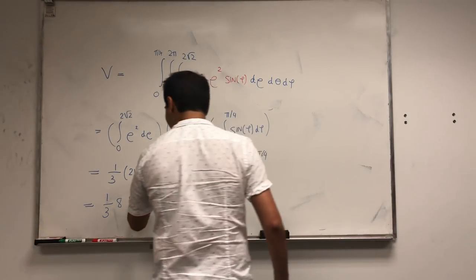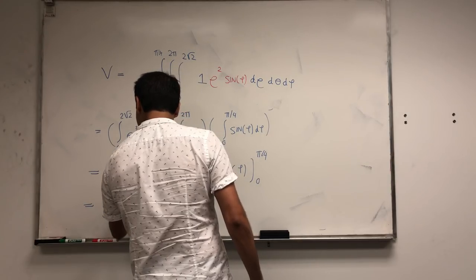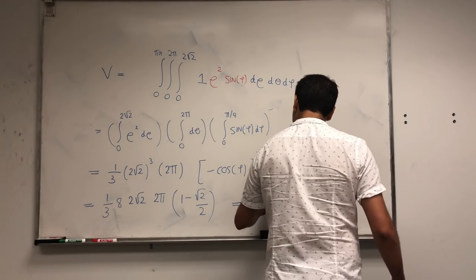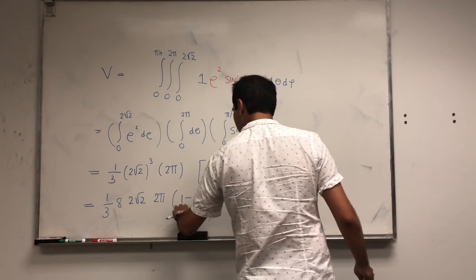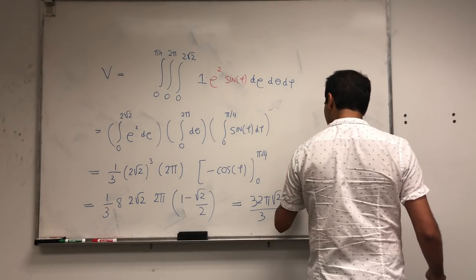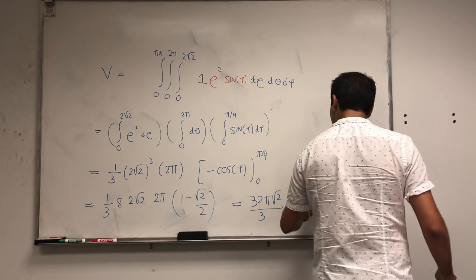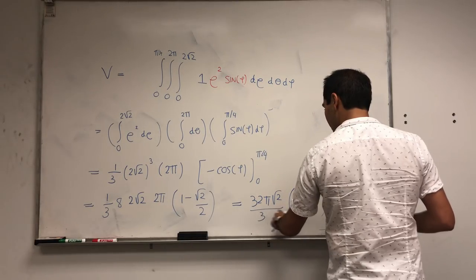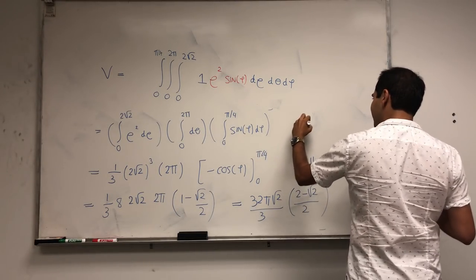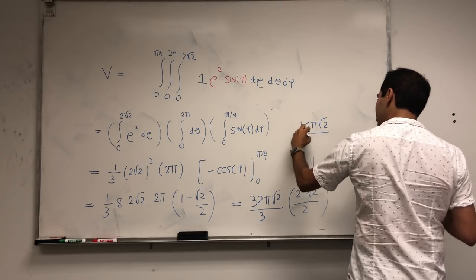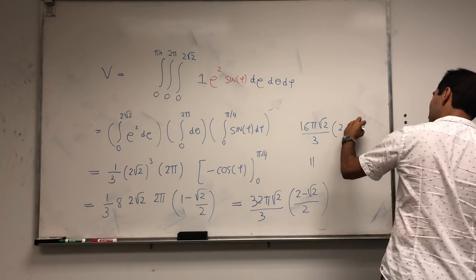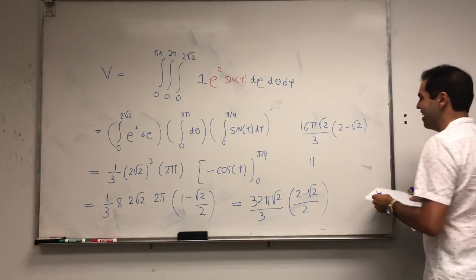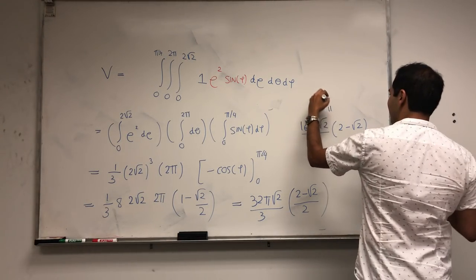Okay, and let's see how many factors do we have here. So 16, 32 pi minus square root of two over two over two. And then it simplifies, so this two cancels out and you get 16 pi square root of two over three times two minus square root of two.